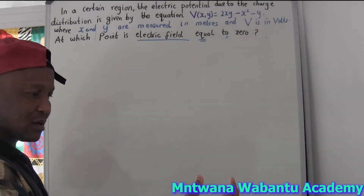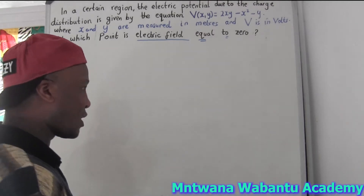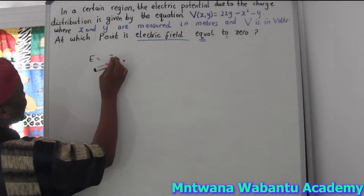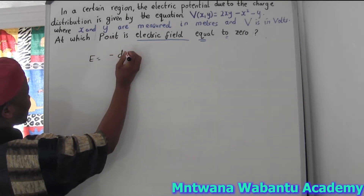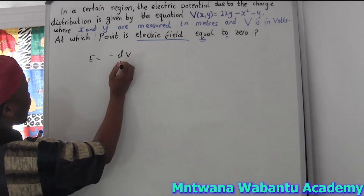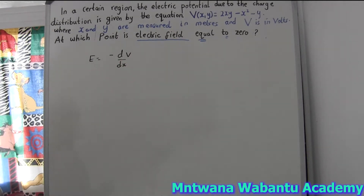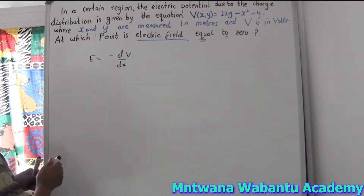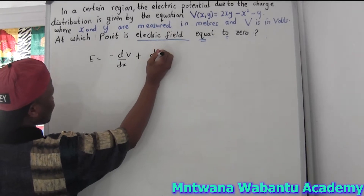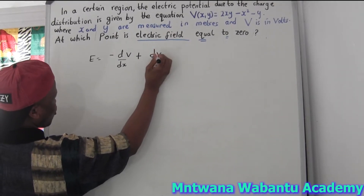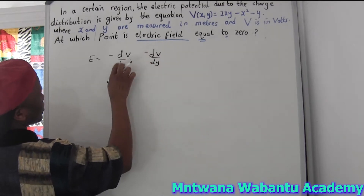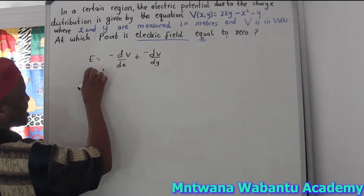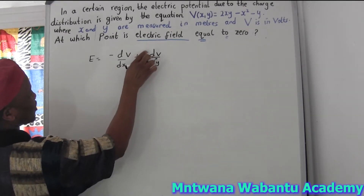First of all, I need to have the electric field and then think about where it equals zero. I have a potential difference, so to get the electric field I must differentiate V. The formula is dV/dx, but it's not only x this time — there's x and y. So for this case you're going to say dV/dx and also dV/dy, with appropriate minus signs, giving the i and j components of E.